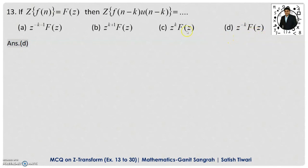For u(n−k), we write Z to the power minus k. And for f(n−k), the Z-transformation gives us F(z). You should remember this shifting property because many times we use it to find the inverse Z-transform, especially when Z is not present in the numerator. This property is correct.